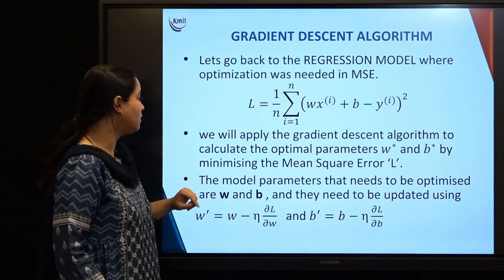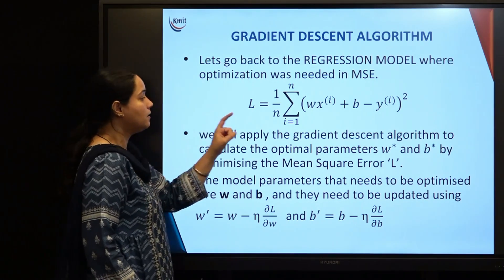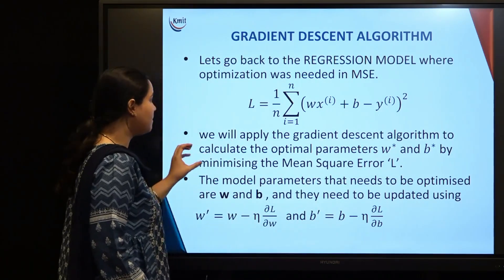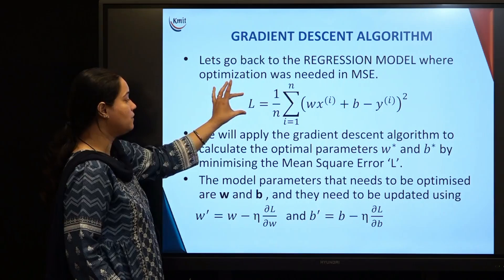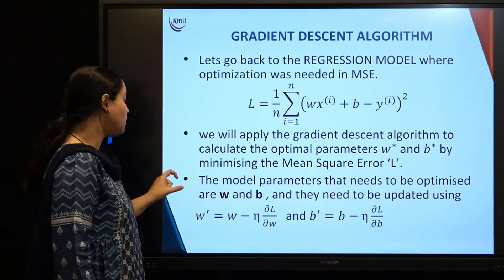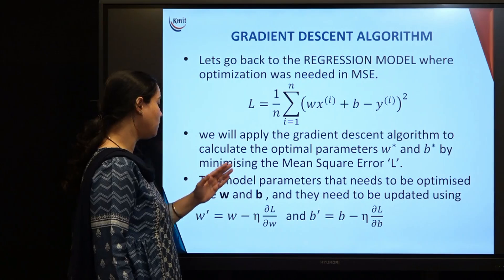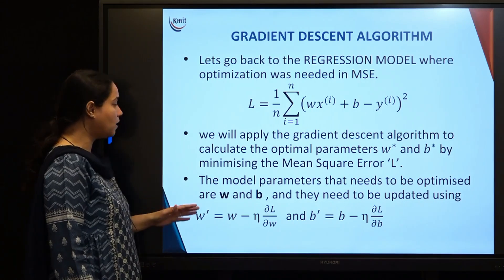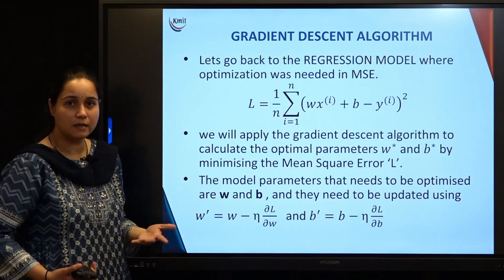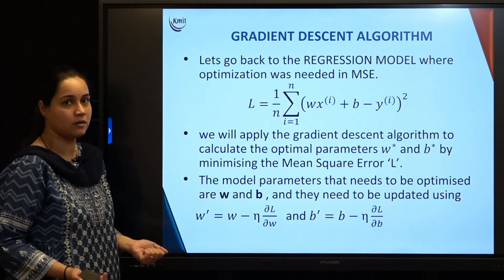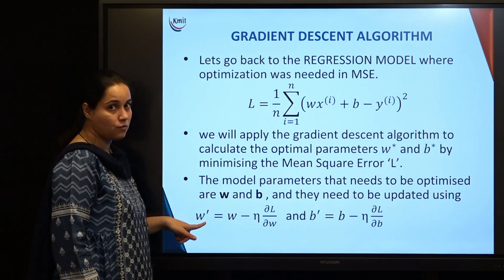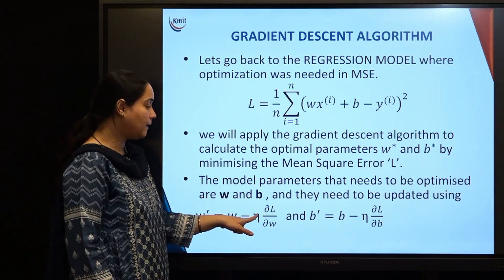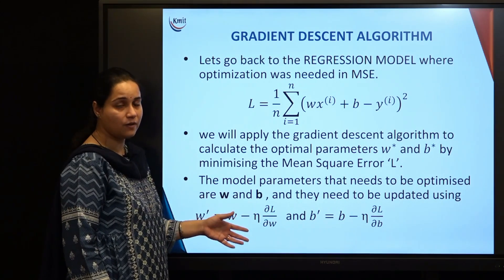We need the best values of weight and bias to get the minimum value of the loss function. We apply the gradient descent algorithm to calculate the optimal parameters, denoting the optimal weight and bias as w* and b*, by minimizing the mean square error L. Replacing x with w and b in the gradient descent formula, the newly updated weight is: w' = w - eta * (∂L/∂w).